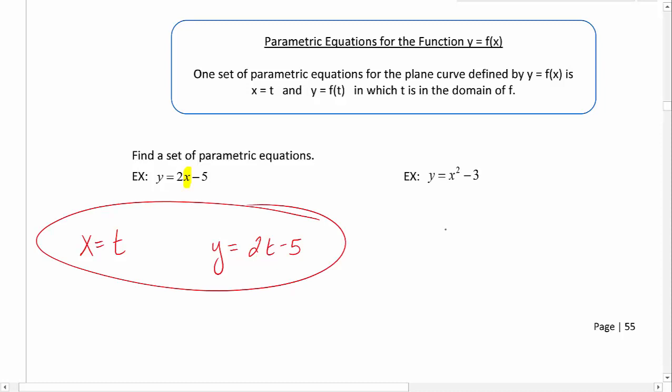So let's do the other one. x is going to be equal to t. y is going to be equal to t squared minus 3. Don't make this hard. Be happy that there's an easy one.